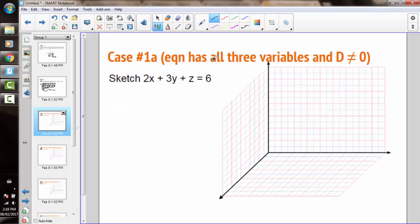So first case is when we have an equation with all three variables, x, y, and z, and our d value is not 0. So we don't have 0 on one side of the equal sign. The easiest way to sketch this plane is to find the x-intercept, the y-intercept, and the z-intercept.